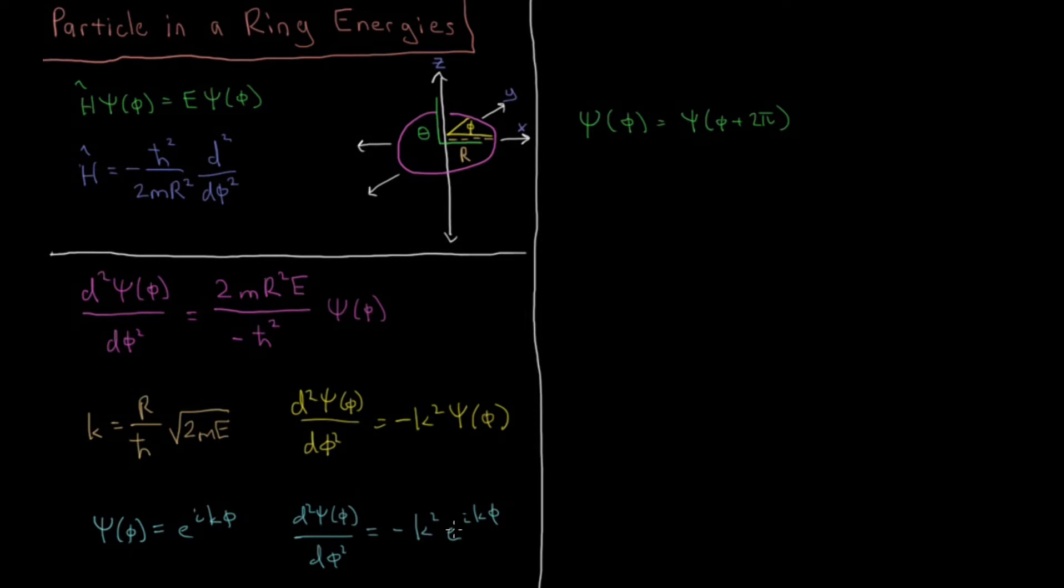So what does this imply for our wave function down here? Well we can substitute in phi plus two pi in our wave function and set it equal to psi of phi there. So we have e to the i k phi equals e to the i k parenthesis phi plus two pi. And now I can say that e to the i k phi plus two pi is e to the i k phi plus i k 2 pi. Okay and that's all good and well. And we can also factor that to say e to the i k phi times e to the i k 2 pi.